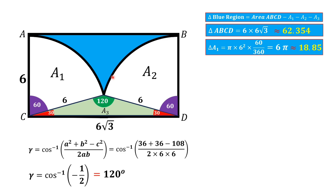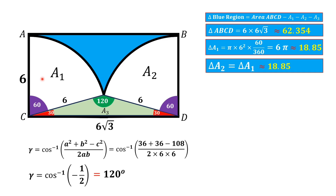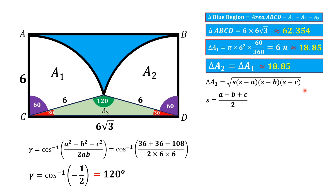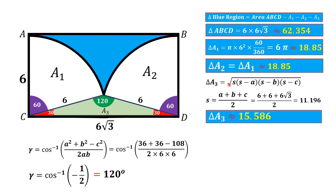Moreover, the area A2 is identical to A1, therefore A2 is also equal to 18.85 square units. Now we have to find the area of this triangle whose all sides are given. We use Heron's formula, a well-known formula where S = (A + B + C) / 2. That gives us S approximately equal to 11.196. By substituting S, A, B, and C in the formula, we get the area A3 approximately equal to 15.586 square units.